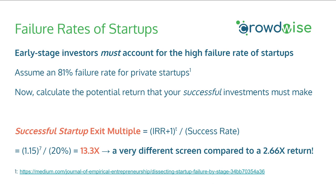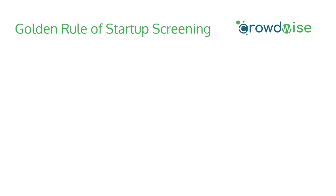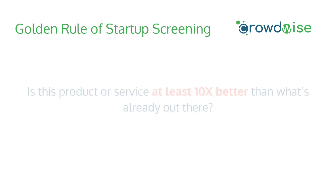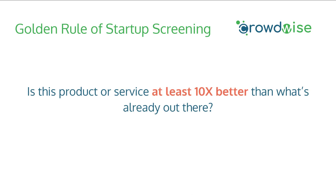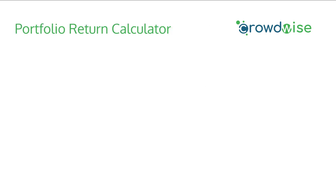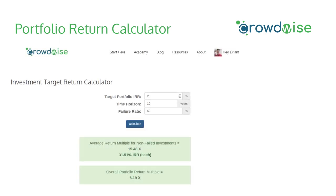Here's a reference for startup failure rates broken down by stage. We refer to this as our golden rule of startup screening — a quick back-of-the-envelope calculation. In general, ask yourself: is this product or service at least 10x better than what's already out there? We've shown why that 10x return multiple is so important and where it comes from. To make this easier, we created a Portfolio Investment Target Return Calculator at crowdwise.org under the Resources dropdown.